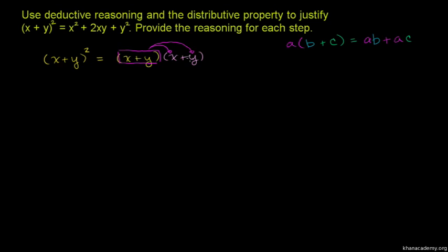Applying the distributive property again: (x + y) times x gives us x times x plus y times x. Then (x + y) times y gives us x times y plus y times y. These are our four terms.